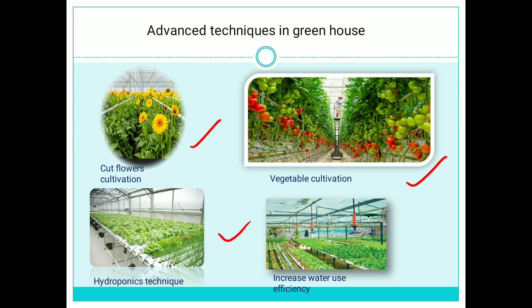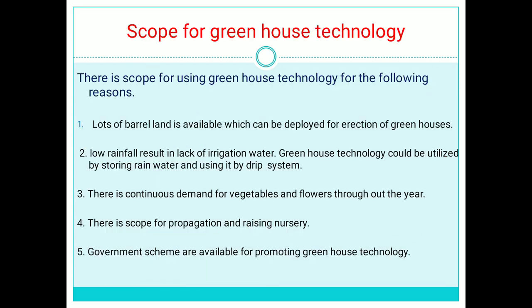There is scope for hydroponics techniques inside greenhouses. Water use efficiency can be increased through foggers and drip irrigation systems. Regarding the scope for greenhouse technology: lots of barren land is available which can be deployed for the erection of greenhouses. Low rainfall results in lack of irrigation water, but greenhouse technology could be utilized by storing rainwater and using it through the drip system.